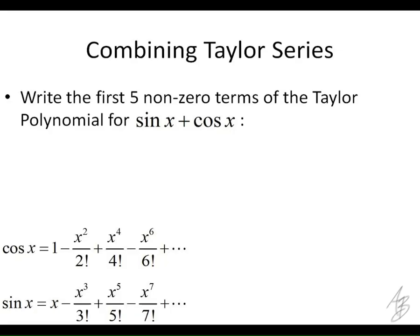On this one I want to write the first five non-zero terms of the Taylor polynomial for sine of x plus cosine of x. This is going to be centered at zero because this is the Taylor polynomial of cosine centered at zero and this is the Taylor polynomial of sine centered at zero.